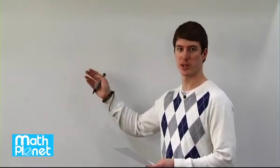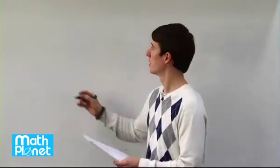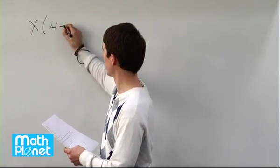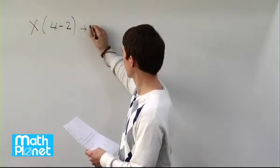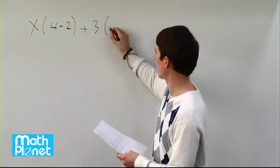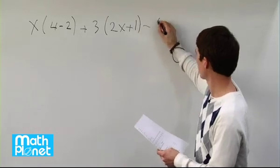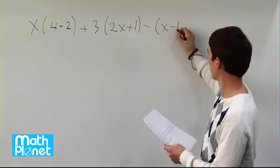Here we have another algebraic expression that we want to simplify as much as possible. The expression reads x times quantity 4 minus 2 plus 3 times the quantity 2x plus 1 minus the quantity x minus 1.